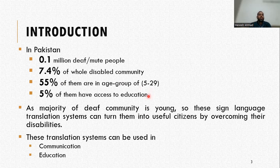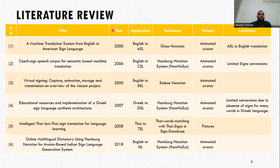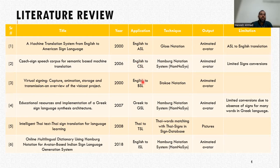There is a need for a system that can assist them to learn sign languages so that they may be converted into useful citizens by overcoming their disabilities. Such a translation system may be used for better communication and education. Looking at the literature review, we have different applications for different sign languages — for example, translation from English to American Sign Language, English to Czech Sign Language, English to British Sign Language, Greek to Greek Sign Language, Thai to Thai Sign Language, and English to Indian Sign Language.